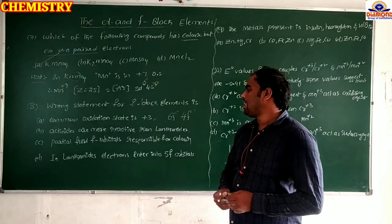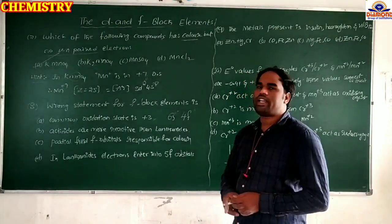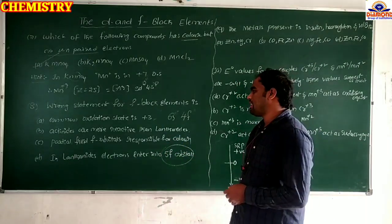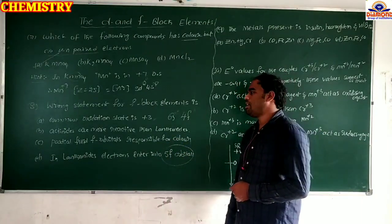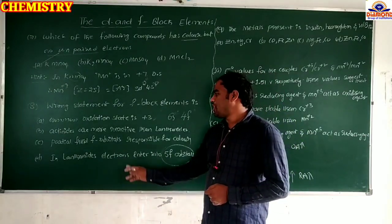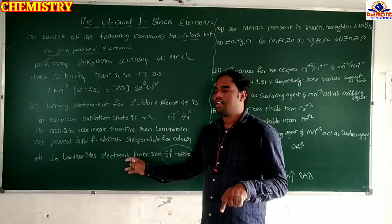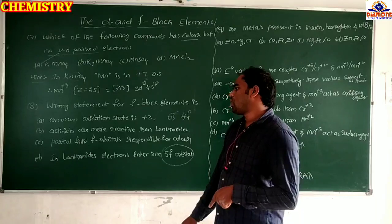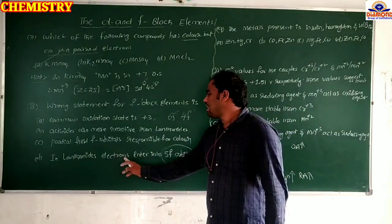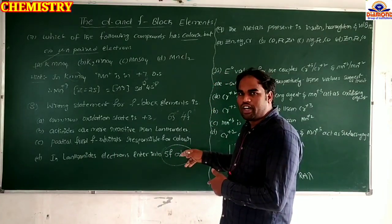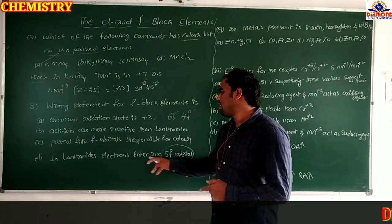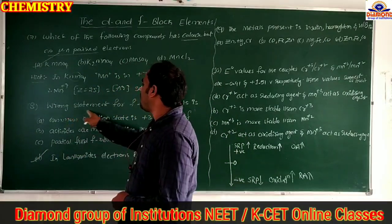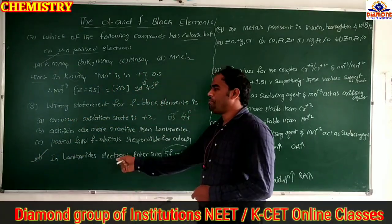Option D states that in lanthanides, electrons enter into 5f orbitals — this is the wrong statement. In lanthanides, the differentiating electrons enter into 4f sub-shell, while in actinides they enter into 5f sub-shell. Therefore option D is the wrong statement for f-block elements.